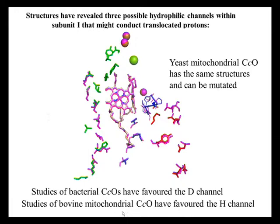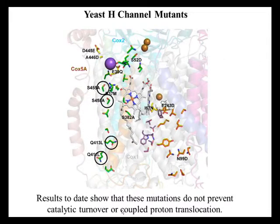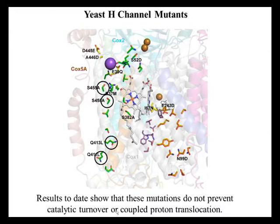Unfortunately, it's very difficult to make mutations in cytochrome oxidase from a mammalian source, such as bovine mitochondrial cytochrome oxidase. So what we've done is to take the yeast enzyme, which is again the mitochondrial enzyme and almost identical in structure to the human and mammalian forms. Importantly, we're able to mutate the yeast form of the enzyme, which allows us to do the same types of experiments that have been done in bacterial systems to test what the H channel is doing in the larger mitochondrial enzymes. Here's a picture of what we think the structure of the yeast enzyme is, with four different residues that comprise what would be the H channel.